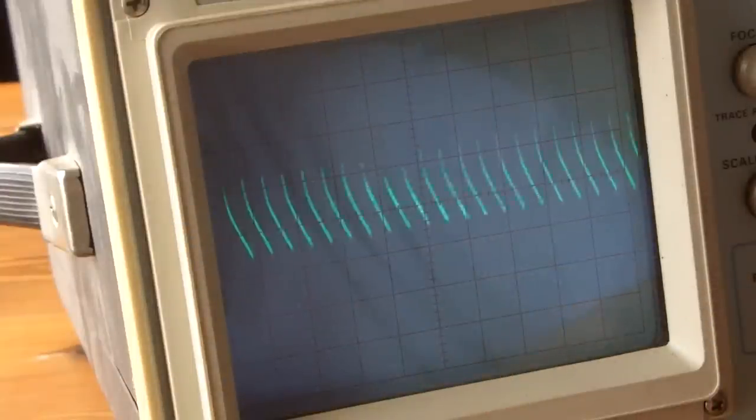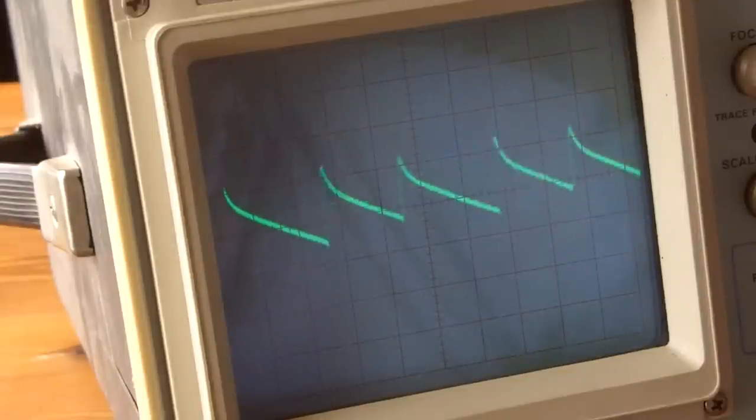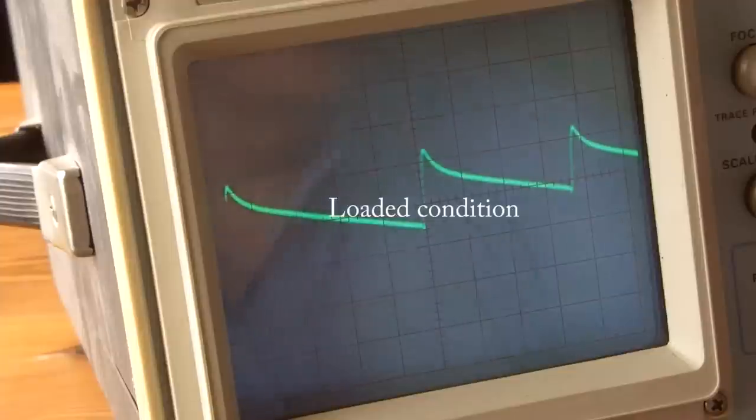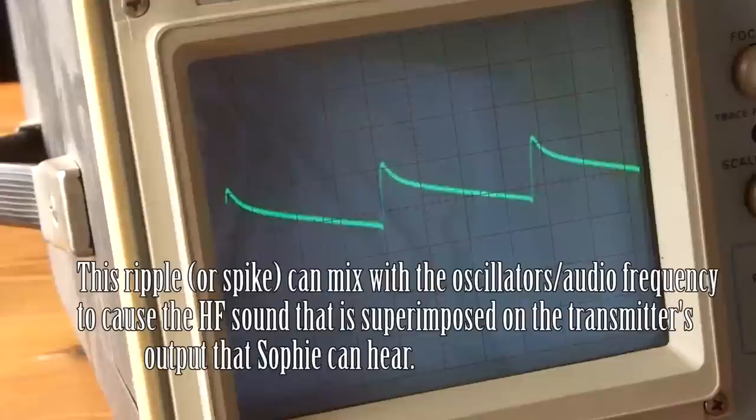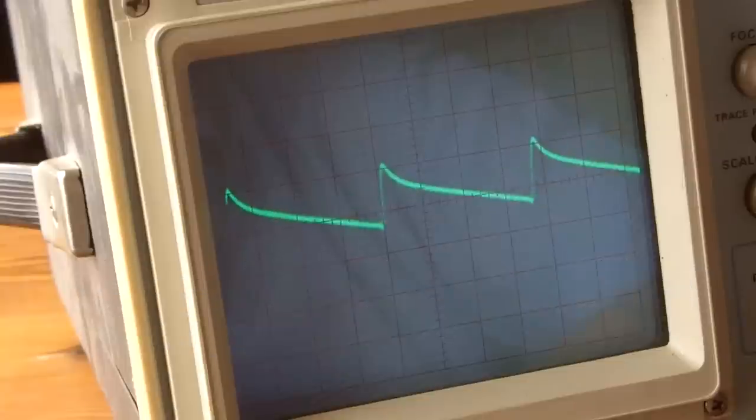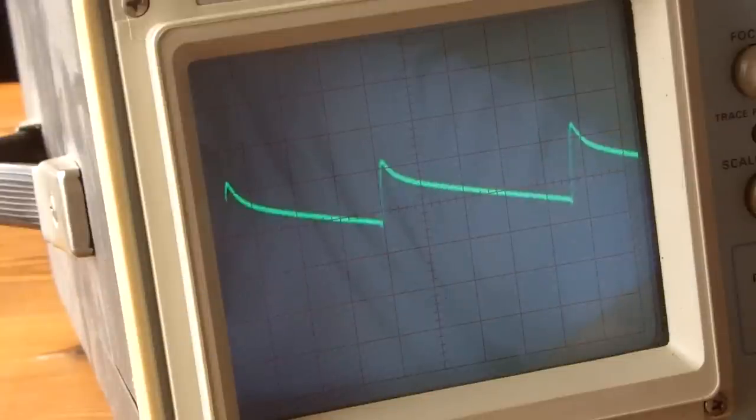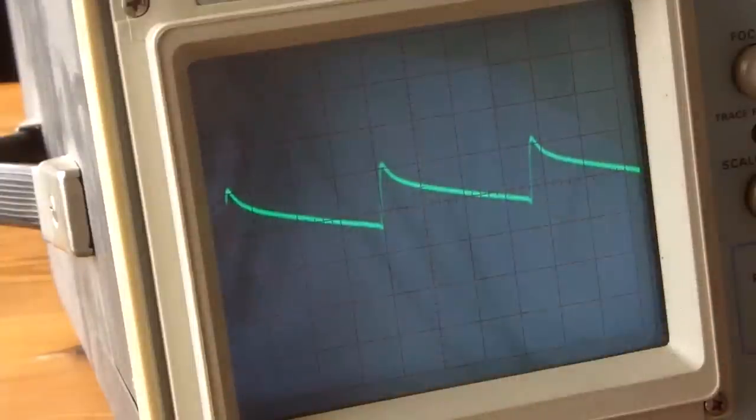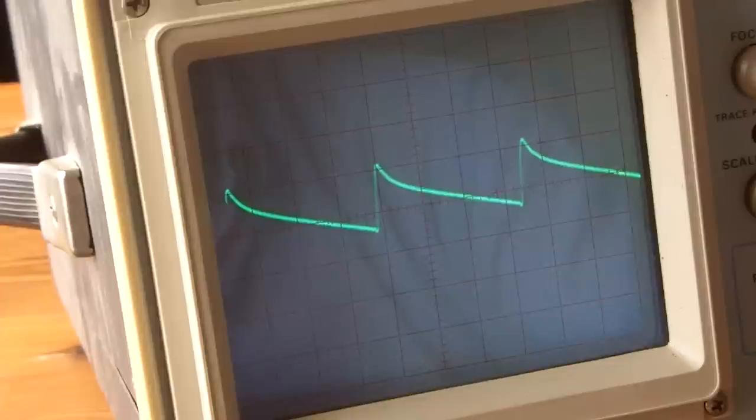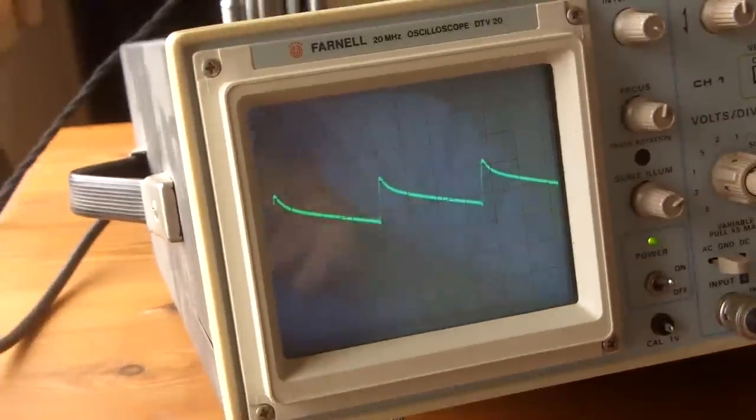When I switch the transmitter on, I'm going to open up the time base now. The time base now is on 50 microseconds per division, and we've got one, two, three, four divisions there. So as I switch the transmitter on and off, that's the transmitter off, that's the transmitter on. So reasonably, it's fair to say that that is going to change with load. I'm just going to turn the aerial tuner, and as the aerial tuner affects the load, zoom out a bit so as you can see what's going on.